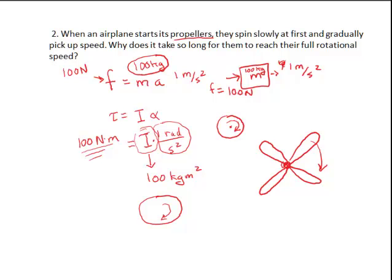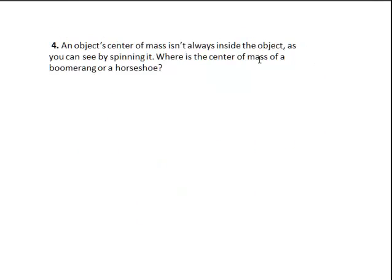Now let's talk about this number four. I like this particular problem because it's actually so easy, but it isn't obvious when you first look at it. It says an object's center of mass isn't always inside the object, as you can see by spinning it. Where is the center of mass of a boomerang or a horseshoe? What is the center of mass? Center of mass means essentially if you had a point and you balanced whatever you had on this point, where would the weight be so distributed that it would balance because the weight on this side pulling it down would be pretty much the same as the weight on that side. So it would be right around, it doesn't necessarily have to be precisely in the geometric middle of your object.